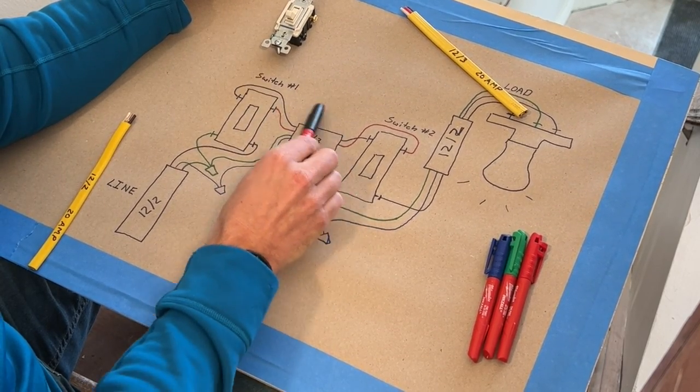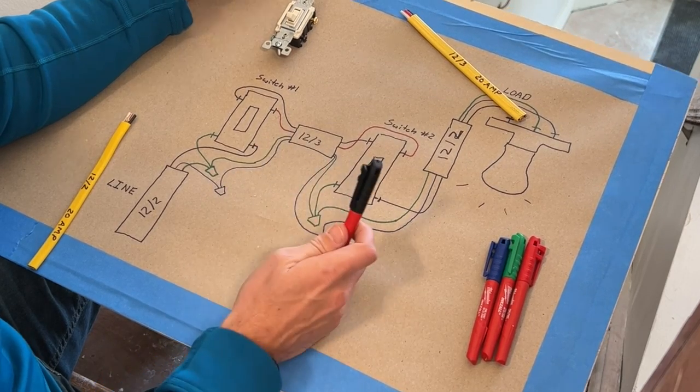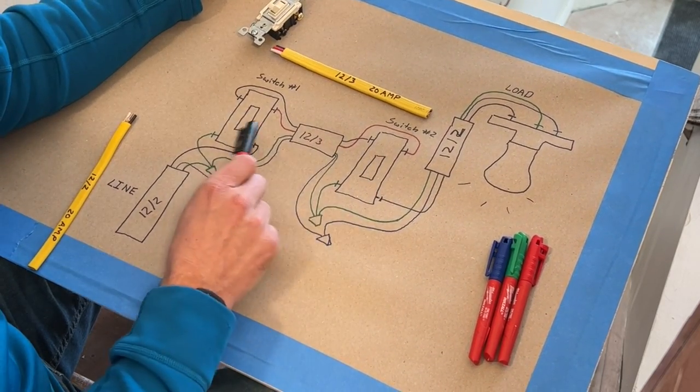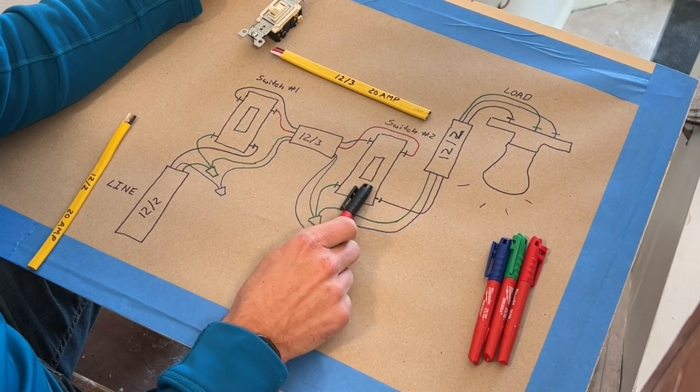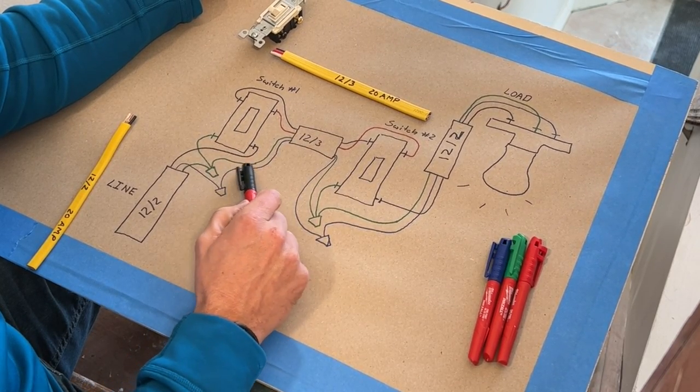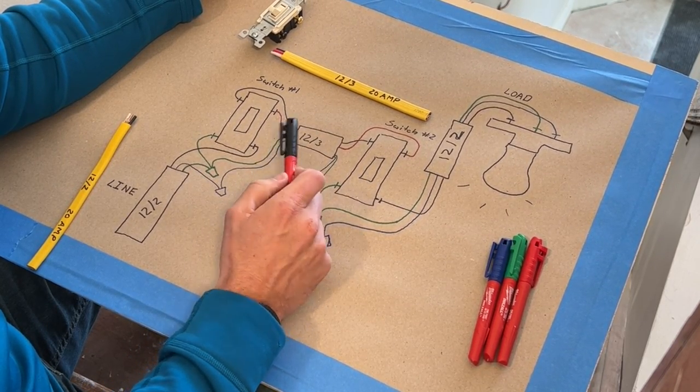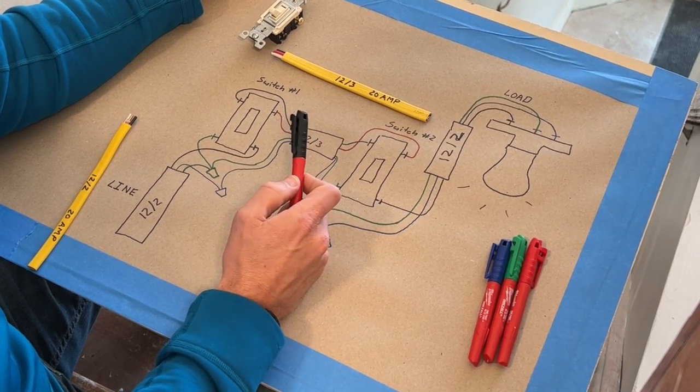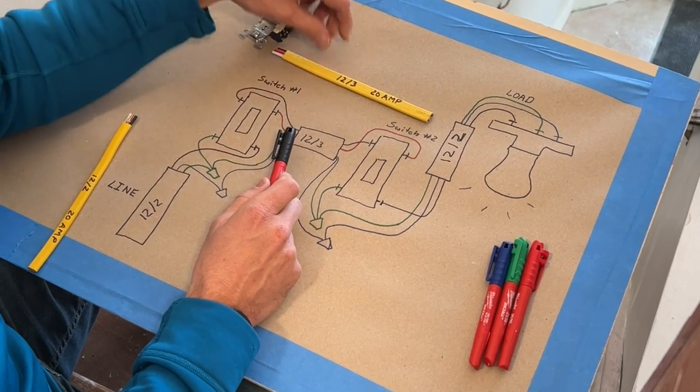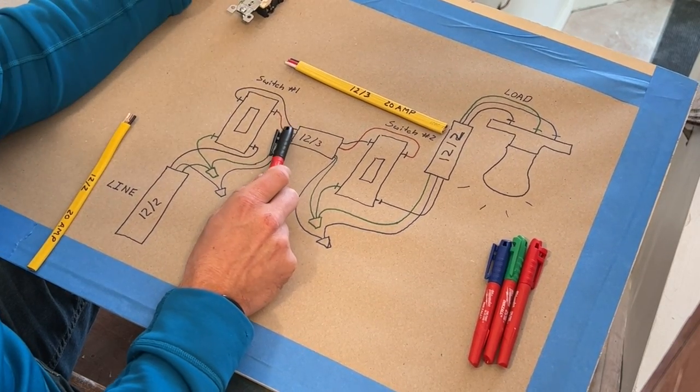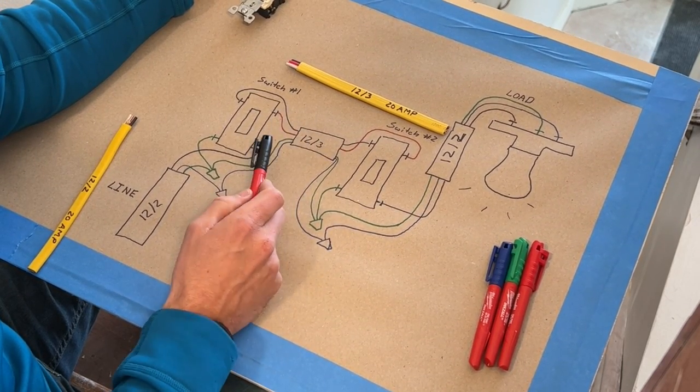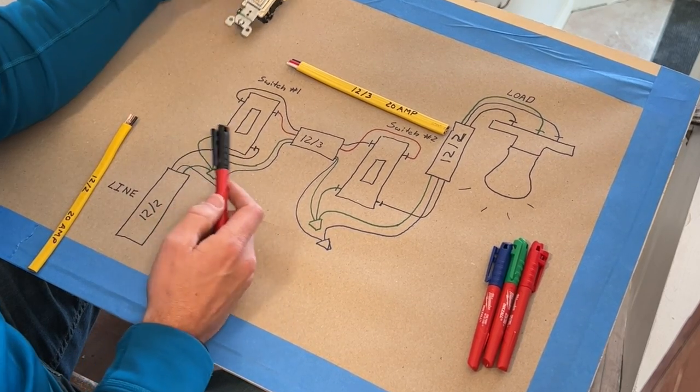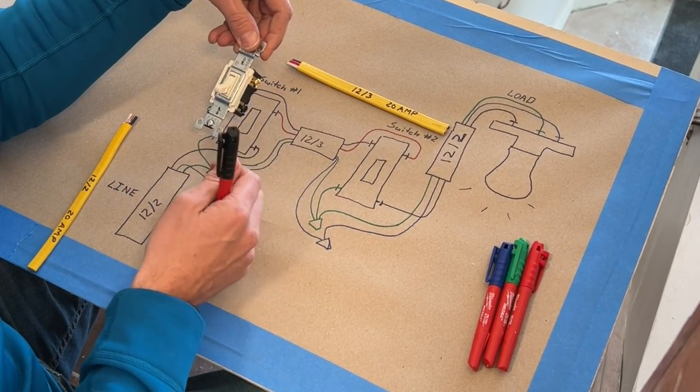And then we'd have 12-3 running between the two switches. Again, we passed the neutral - blue representing a white neutral wire. We passed ground as well. And then we'd take the red hot conductor and the black hot conductor, and we'd connect those up to these two terminals here. And these are our traveler wires.